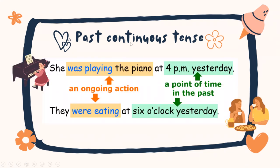For example, we would use the past continuous tense to talk about an ongoing action, and we will put a point of time in the past at the end of a sentence.